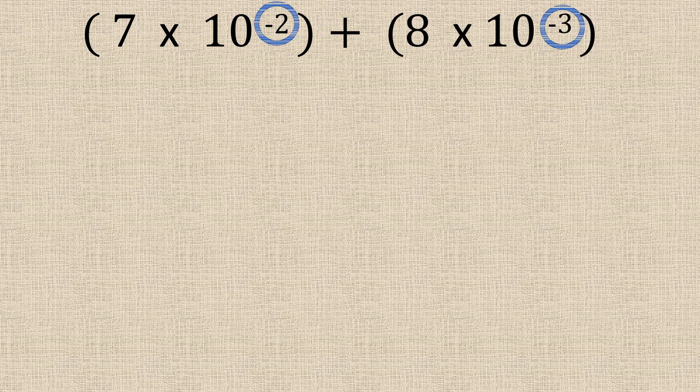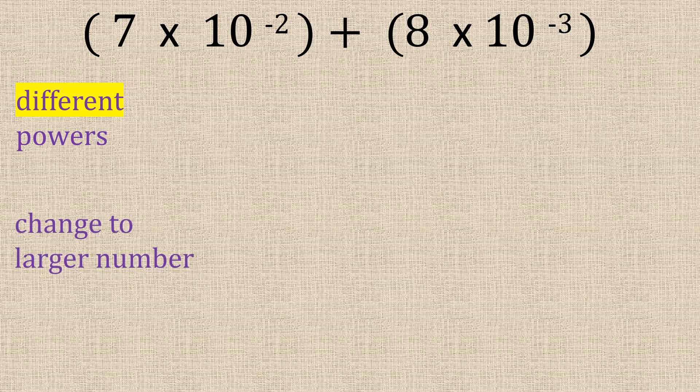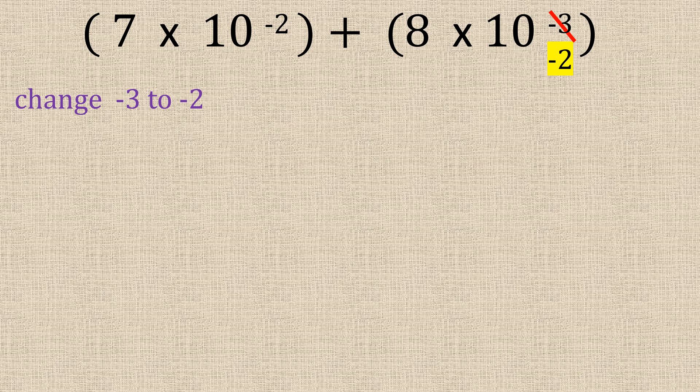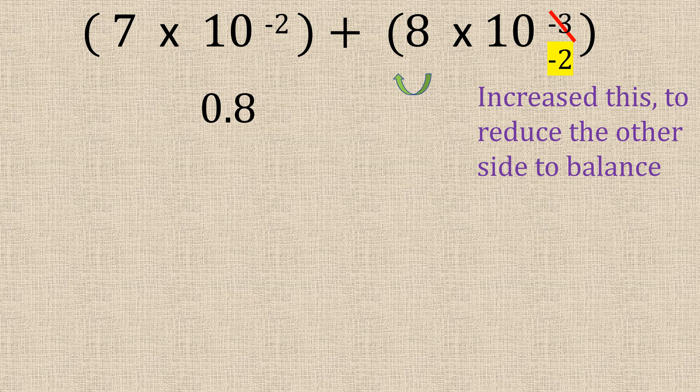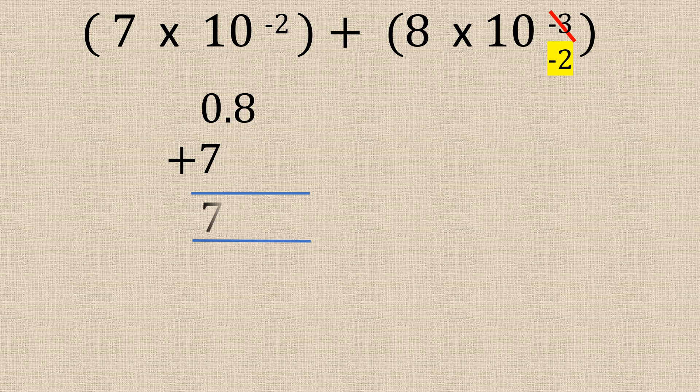So for this one we have negative powers and they're different. So we need to change it to the larger number which is going to be negative 2. Okay so then we reduce the other side to balance. So we have 0.8 plus 7 which is going to give us 7.8. And that would be times 10 to the power of negative 2. Or if we want to put it into ordinary numbers 7.8 and move once twice giving us 0.078.